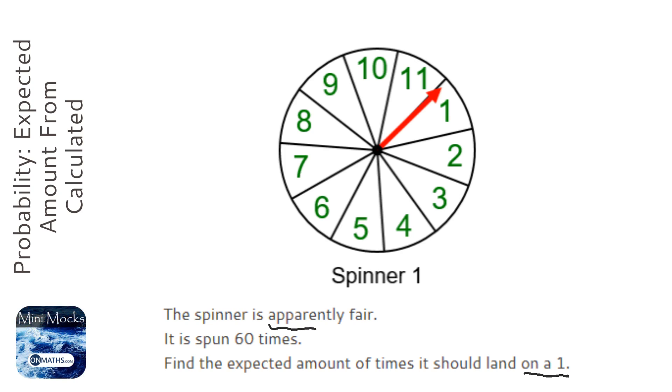So it says it's apparently fair. Now by fair it means that each section of the spinner is equally spaced and there's no weights or secret blue tack that stop the spinner on a specific number. Now if there's 11 outcomes it means the probability of getting a 1 is 1 over 11.